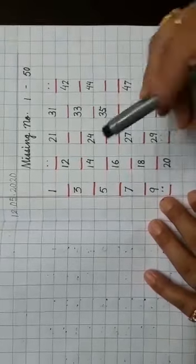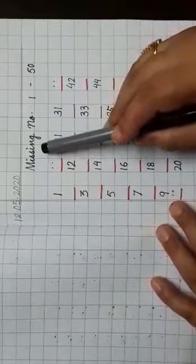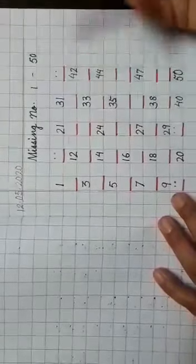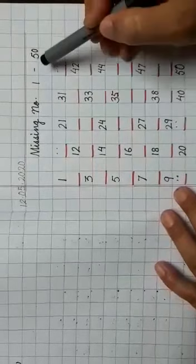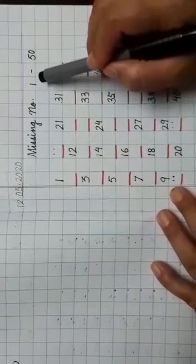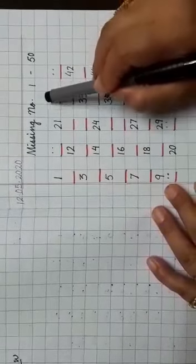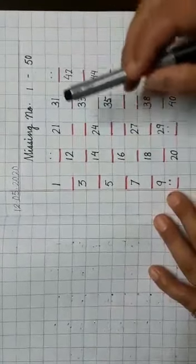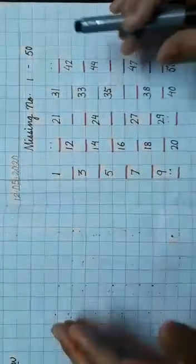Hello students, I'm back again with a new topic: missing numbers. As you are seeing here, this is from 1 to 50, and you have learned this very well in nursery class. That's why I have taken the forward counting and missing number 1 to 50 together.